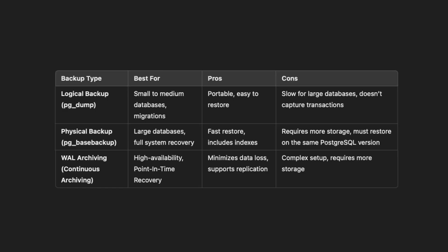WAL logs store every transaction before committing it to the database. By archiving these logs you can roll back to any point in time. To use this you'll need to enable WAL archiving in your PostgreSQL config file. This is used mainly for high-availability setups and crash recovery. The advantage is it ensures minimal data loss in case of failure and can restore your database to any point in time.